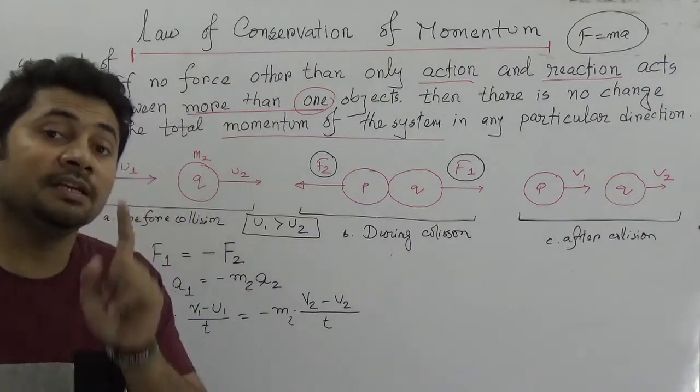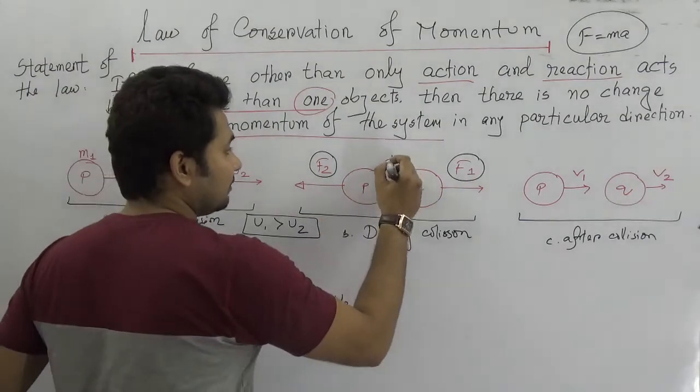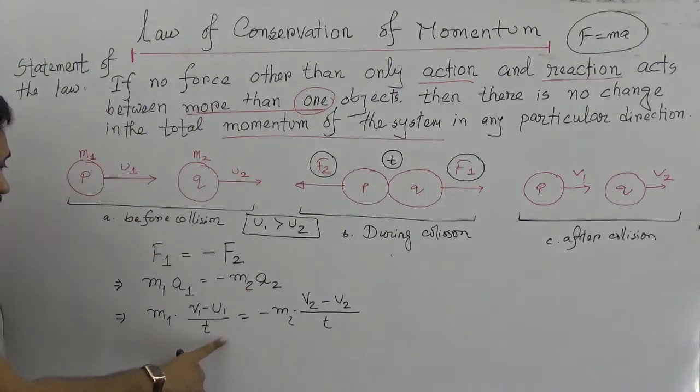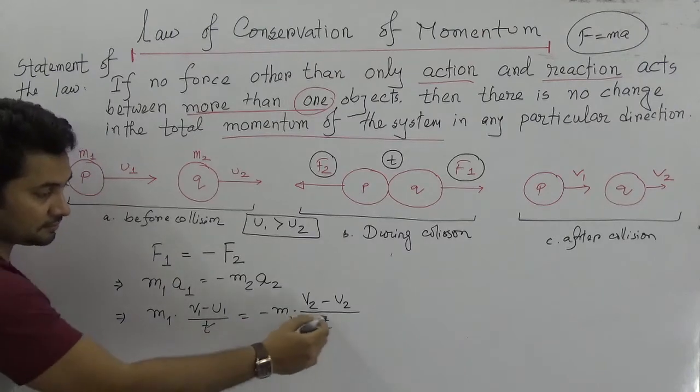From the definition of acceleration we know that A is the change of velocity over time. So M1 times V1 minus U1 by T, and A2 would be V2 minus U2 by T. And the T is the same because the collision will happen at the same time.